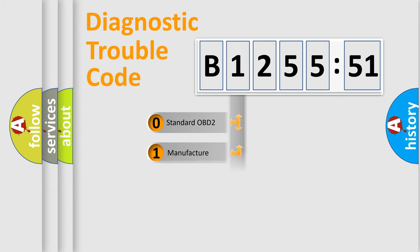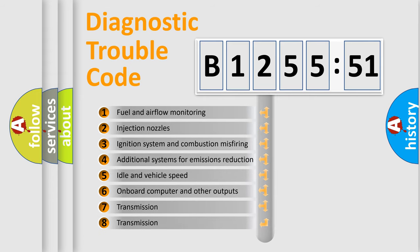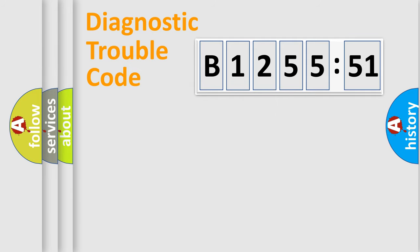If the second character is expressed as zero, it is a standardized error. In the case of numbers 1, 2, or 3, it is a manufacturer-specific error. The third character specifies a subset of errors. The distribution shown is valid only for standardized DTC codes. Only the last two characters define the specific fault of the group.